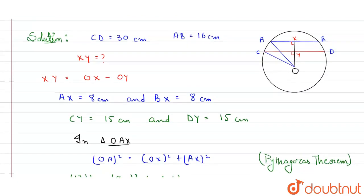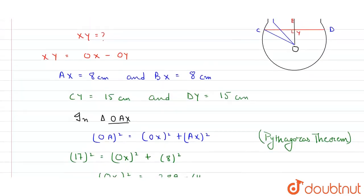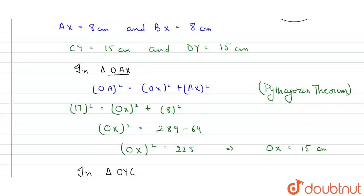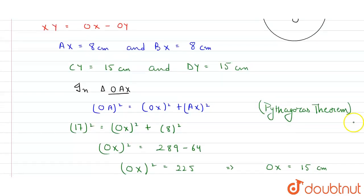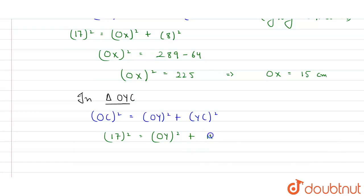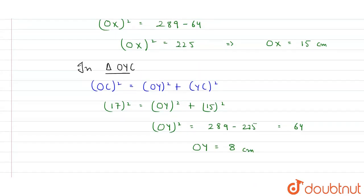Now finding OY using triangle OYC with Pythagorean theorem: OC² equals OY² plus YC². The radius OC is 17 and YC is 15, so 17² equals OY² plus 15². Therefore OY² equals 289 minus 225 equals 64, so OY equals 8 centimeters.